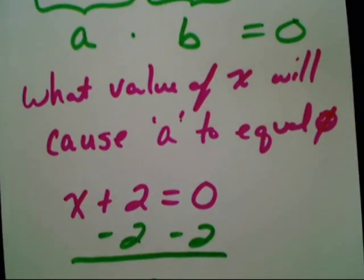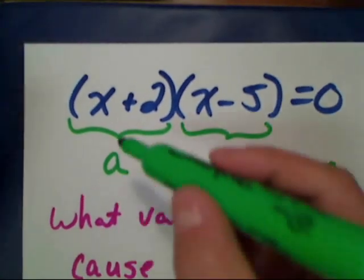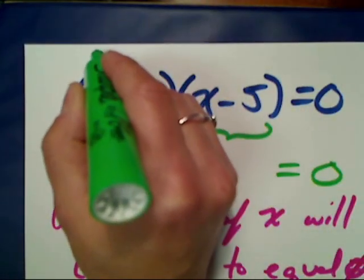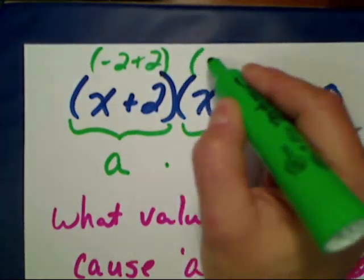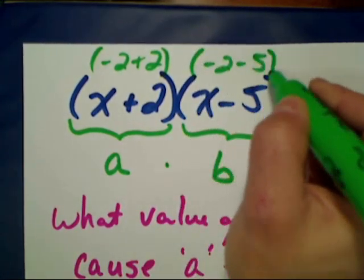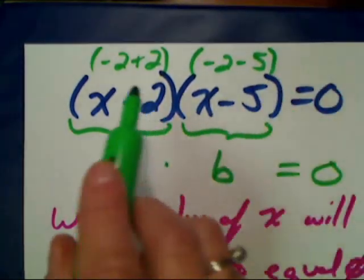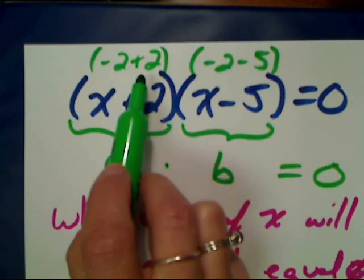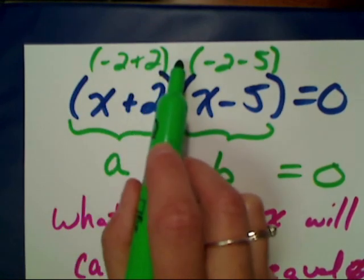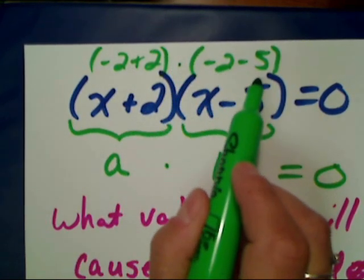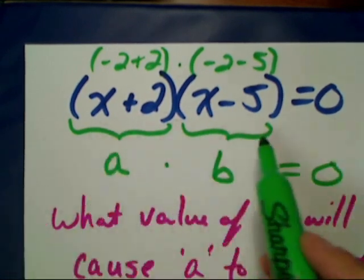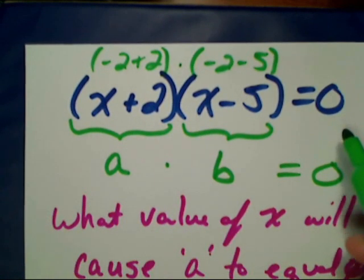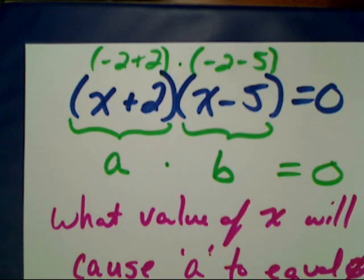Let's plug that back in. If X was negative two, I would have negative two plus two, and here I would have negative two minus five. Negative two plus two is zero. Times — well, that's a negative seven — but zero times anything is zero. So my left side would equal my right side of zero, and so it's a solution. X equals negative two is a solution.